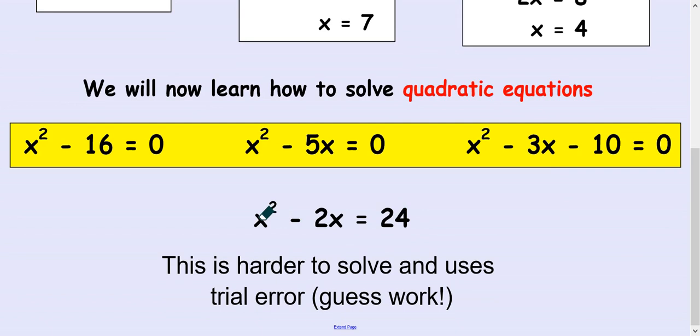Like guess maybe five. Five times five makes twenty-five. Take away two times five is ten. That's not working. You could try six. Six times six is thirty-six. Take away two times six. Six take away twelve. Yes, that works. And that's a kind of cumbersome method. So I'm going to show you how to solve them when this zero is in the right hand side.